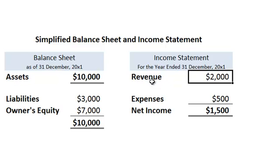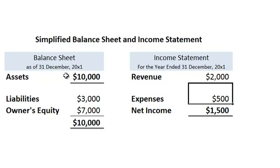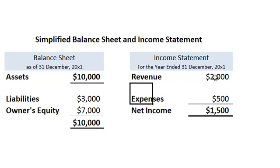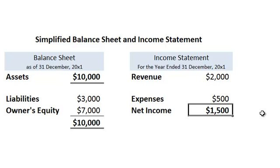For the income statement — highly simplified, though there will be several expense line items — we have revenue of 2,000 minus expenses of 500. Unlike the balance sheet which is a snapshot in time, this is a flow concept: revenue earned and expenses incurred over the period, ending December 31st. So 2,000 minus 500 equals net income of 1,500.